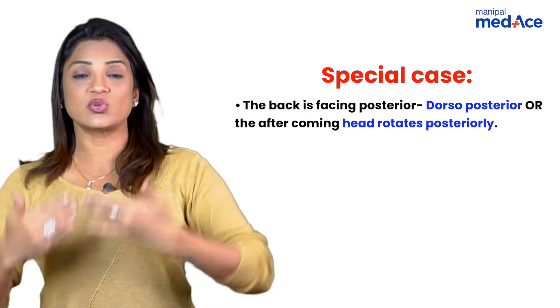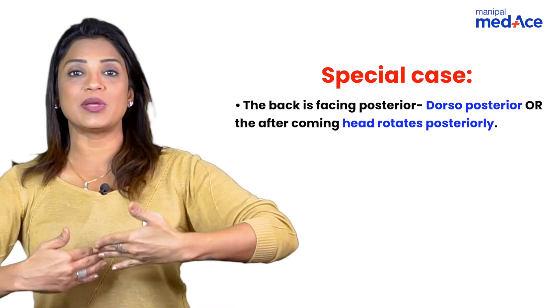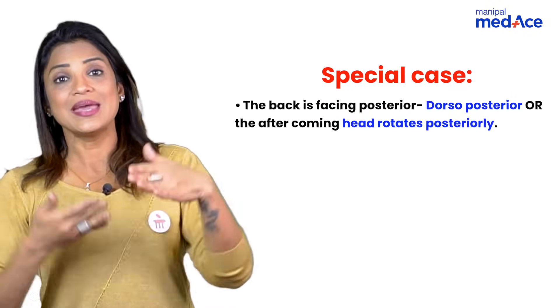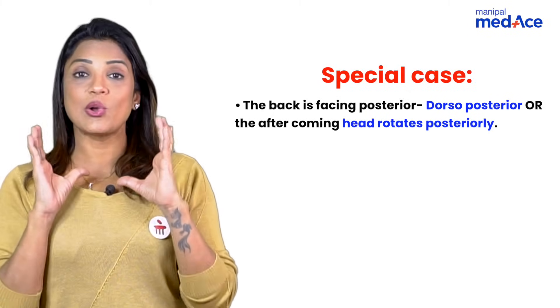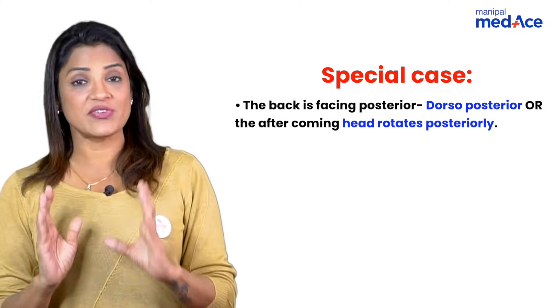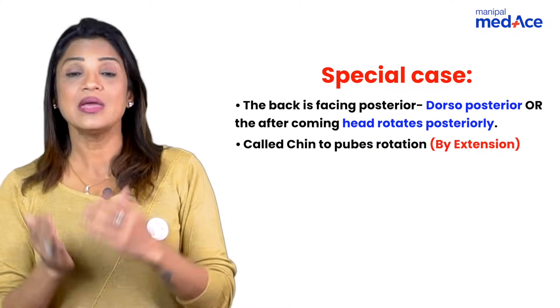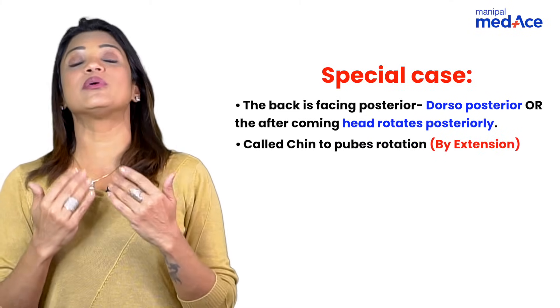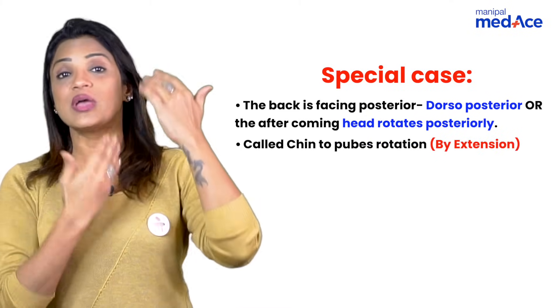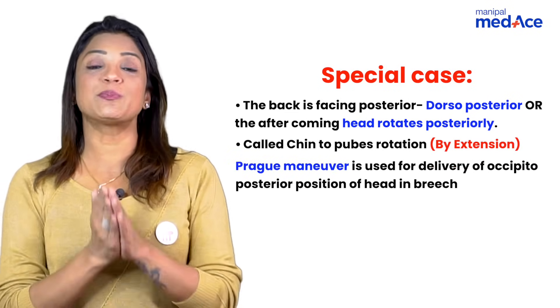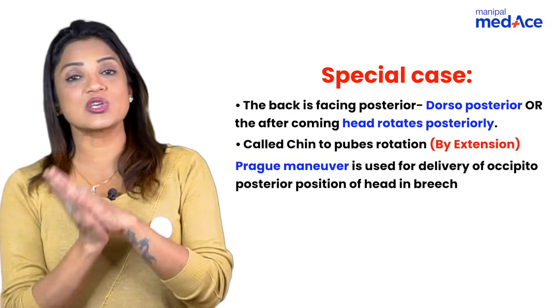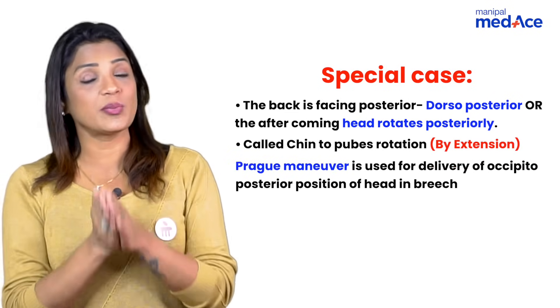There is a special case where the back of the baby is facing posteriorly — the ventral part of the baby is coming out anteriorly. In this dorsoposterior position, the baby's head will not deliver by flexion (which is normal in breech delivery) but will deliver by extension, because it is a ventrally-facing baby. The maneuver used in this case is Prague's maneuver, for the occipito-posterior position of the after-coming head of breech. That is all you need to know about breech management.